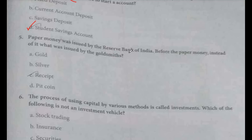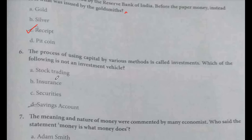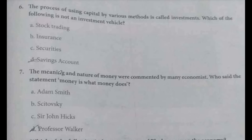Paper money was issued by the Reserve Bank of India. Before paper money, what was issued by goldsmiths? Receipts made of gold were issued by goldsmiths before paper money. Next, question six: the process of using capital by various methods is called investments.